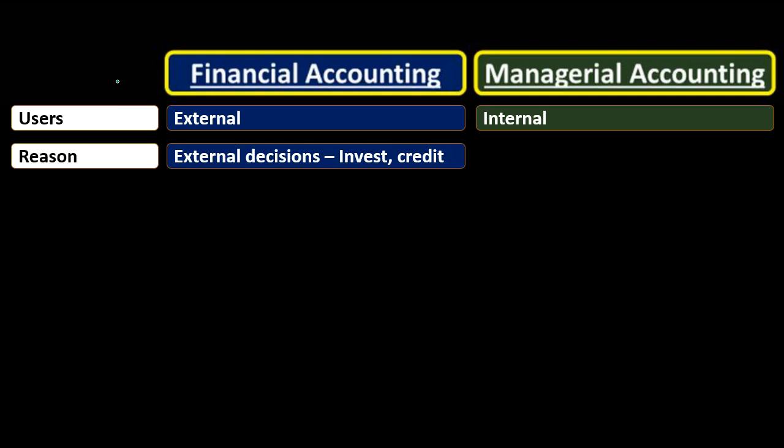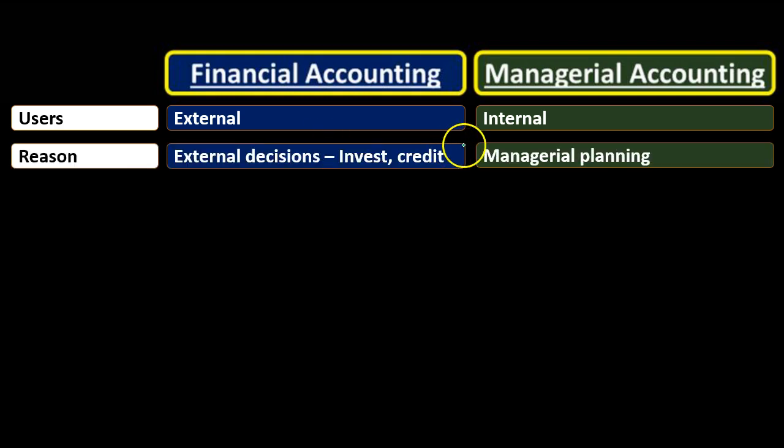Then we have the reason for the accounting. Financial accounting is put together for external decision-making. External users — investors and creditors — want to make investment decisions: should they put money into the business, invest in the stock, or should a bank loan money to the organization? They need financial statements and reliable numbers, typically showing the full company's big picture. Managerial accounting, on the other hand, is focused on managerial planning — taking information and putting together a plan for the future.